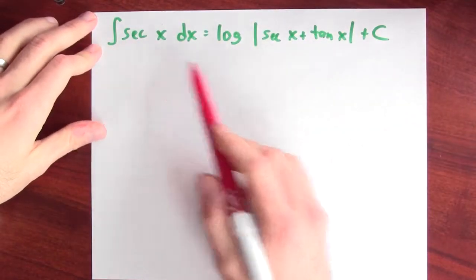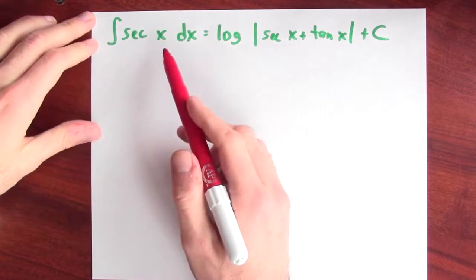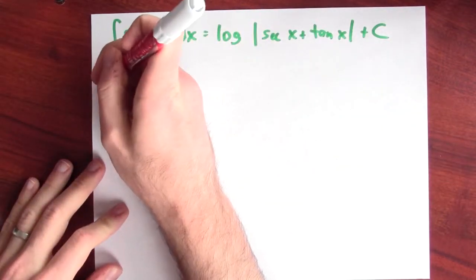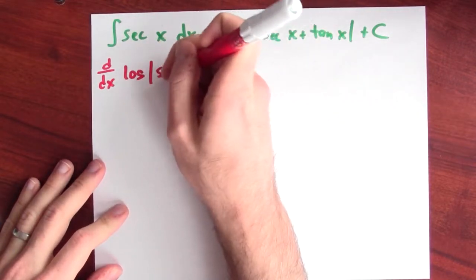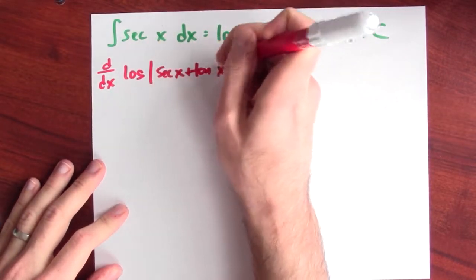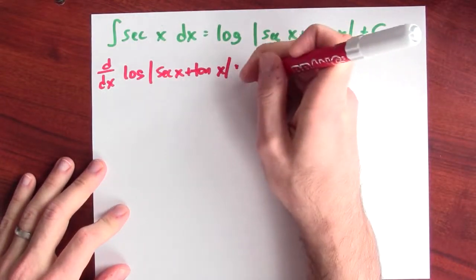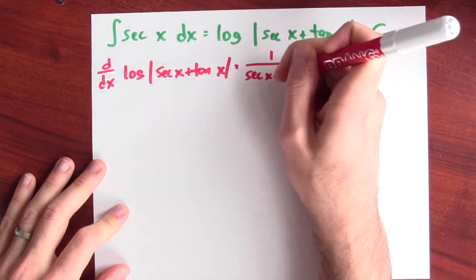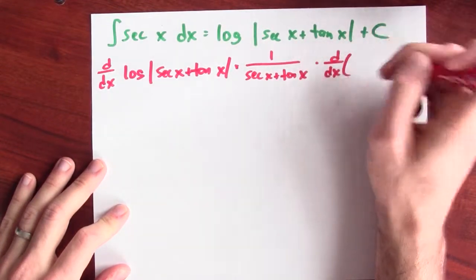Again, it's totally mysterious where this came from, but we can verify that that's truly an anti-derivative. To verify that the anti-derivative of secant x is this, it's enough to differentiate this and end up with secant x. I'll differentiate log of the absolute value of secant x plus tangent x. The derivative of log is 1 over the inside function, which is secant x plus tangent x, times the derivative of the inside function.